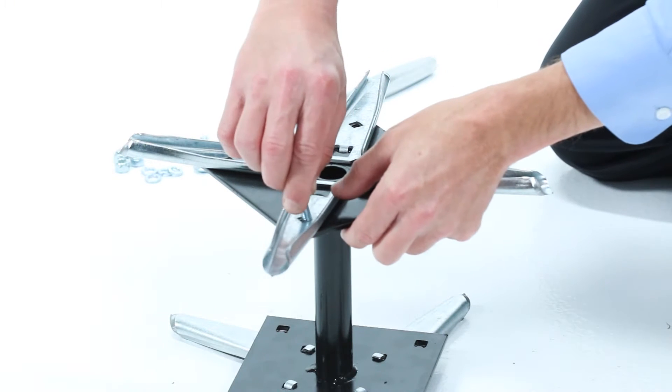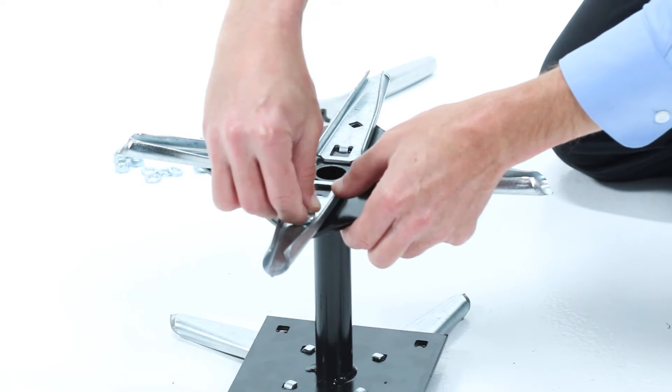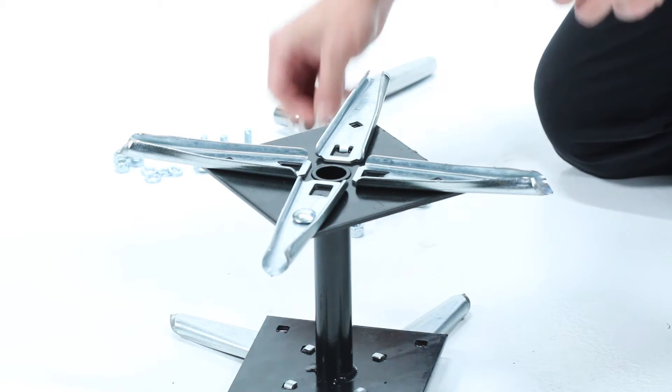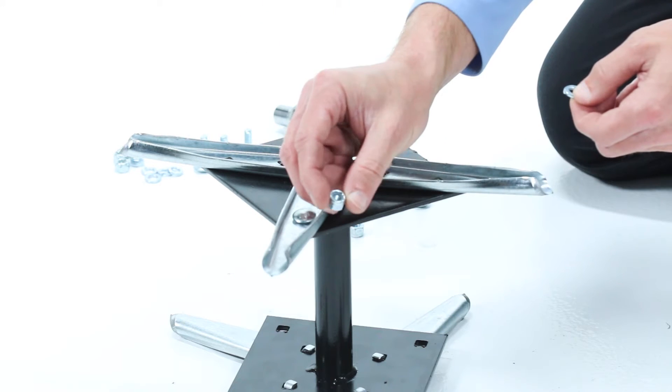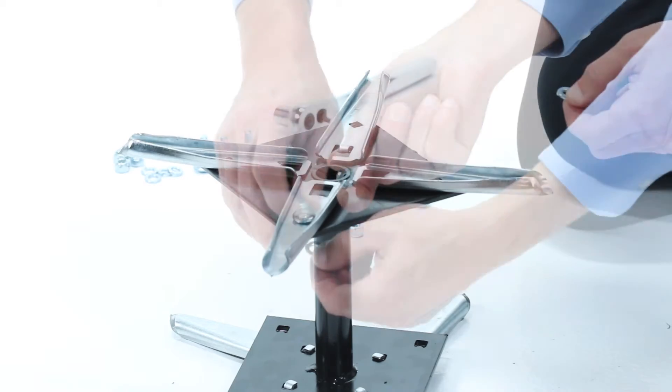Then, fasten each knife by inserting a 5/16 inch by 3/4 inch carriage bolt, Part F, a 5/16 inch lock washer, Part N, and a 5/16 inch nylock nut, Part K.